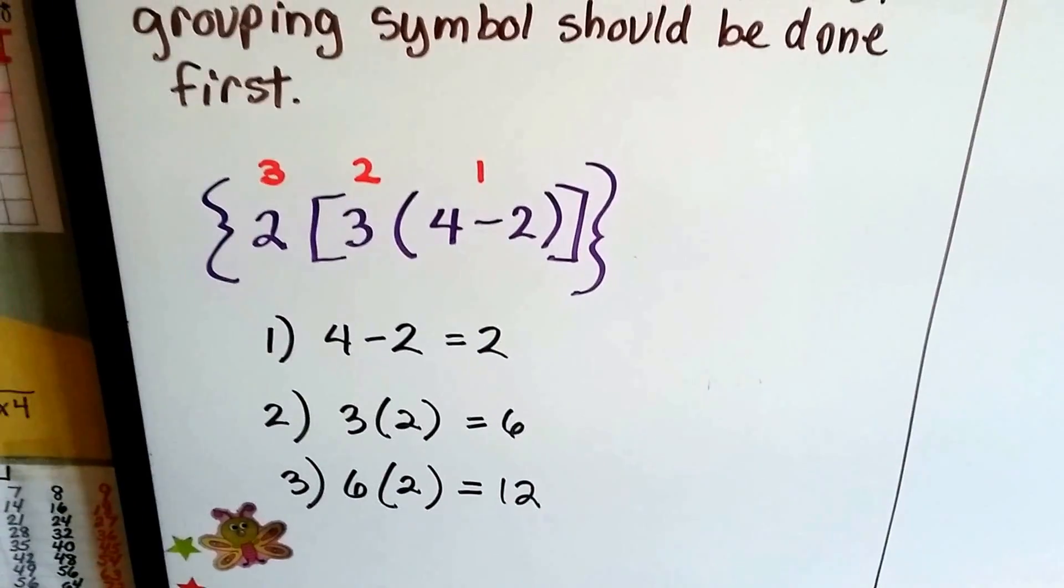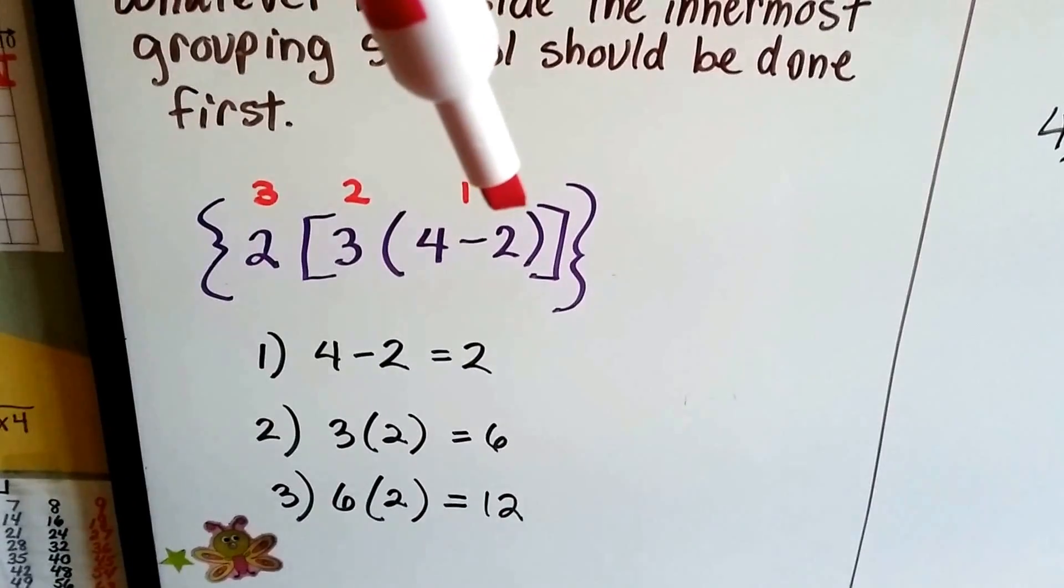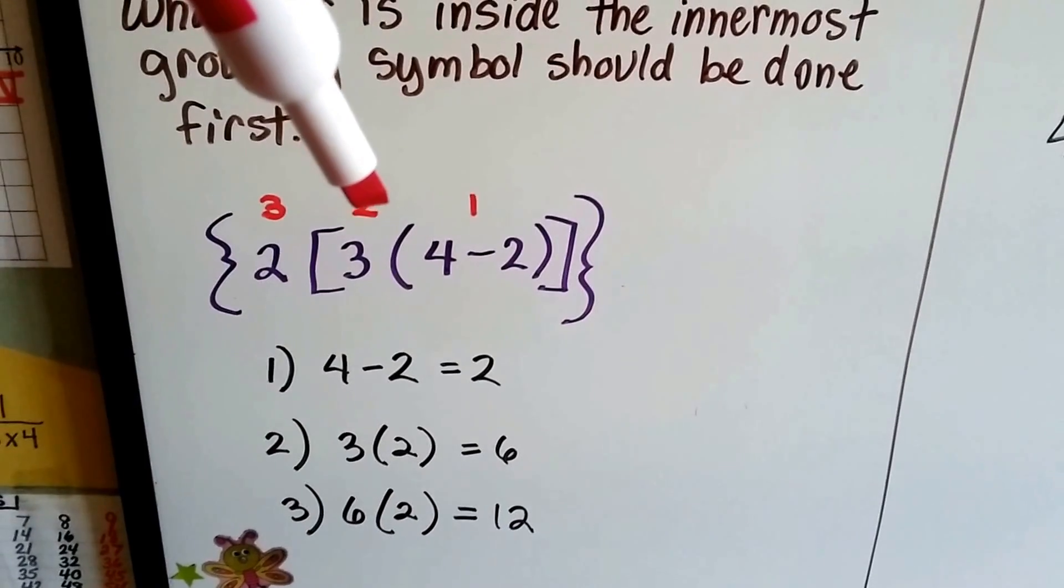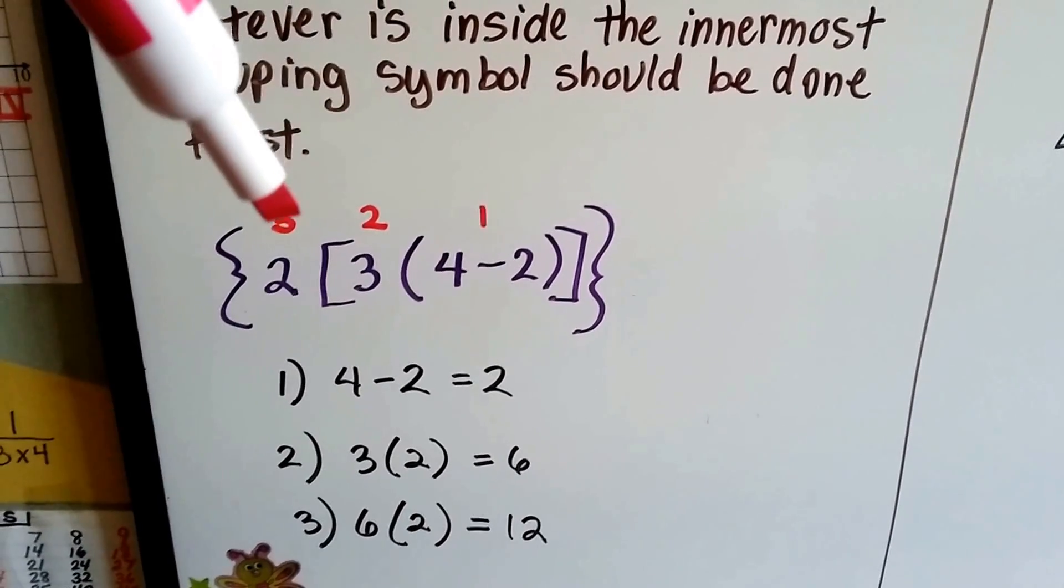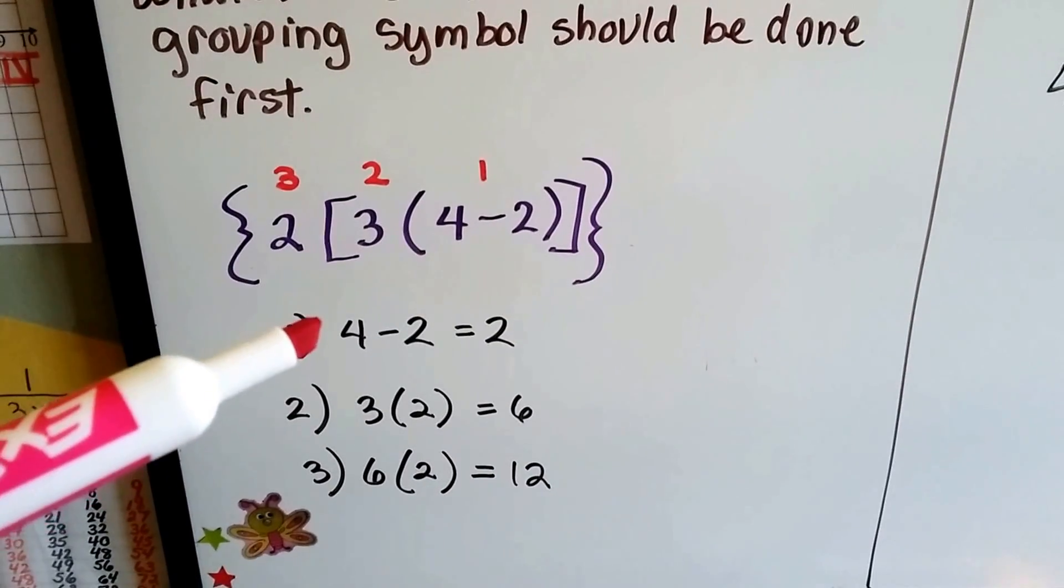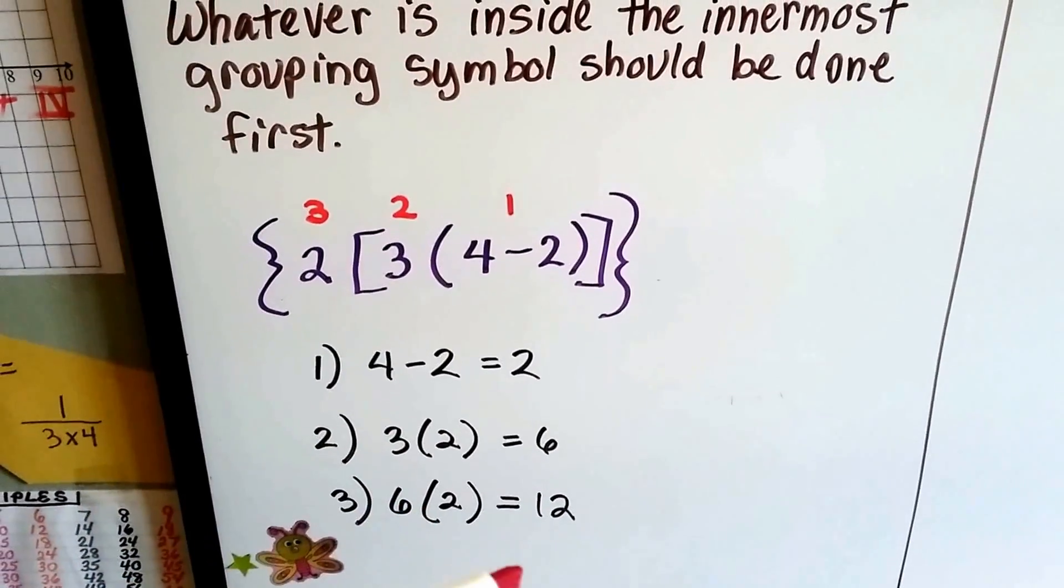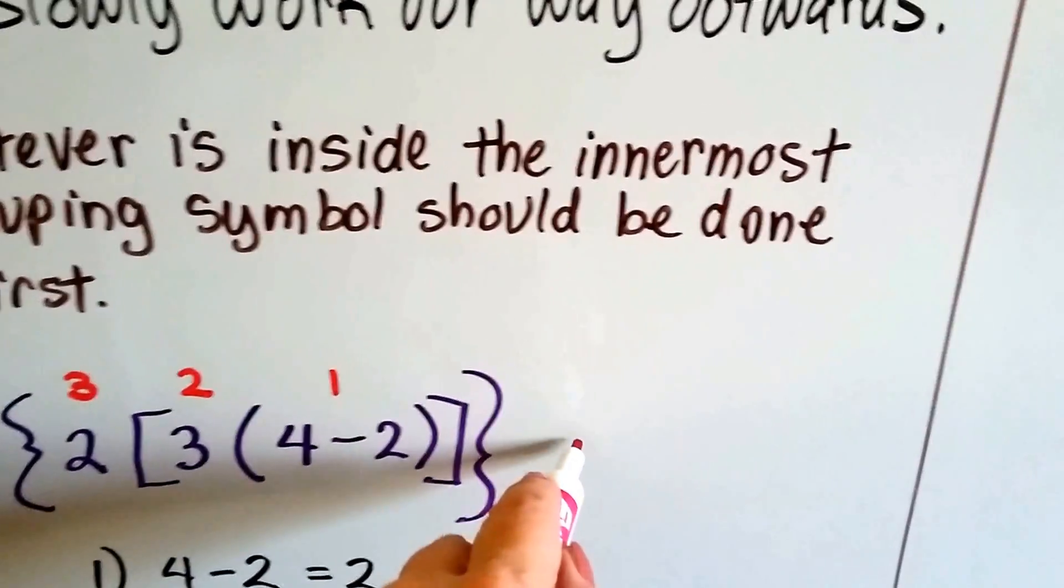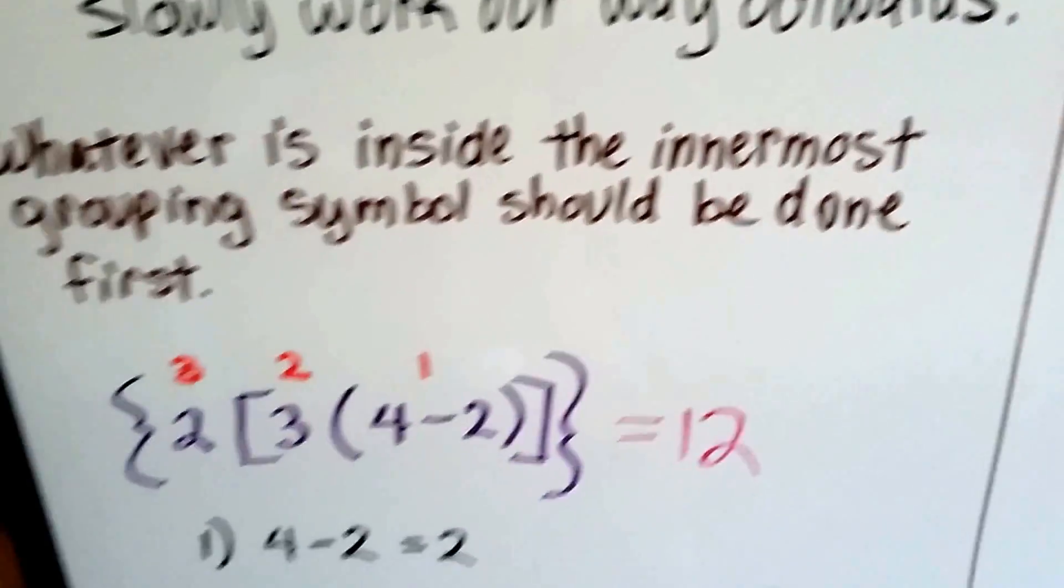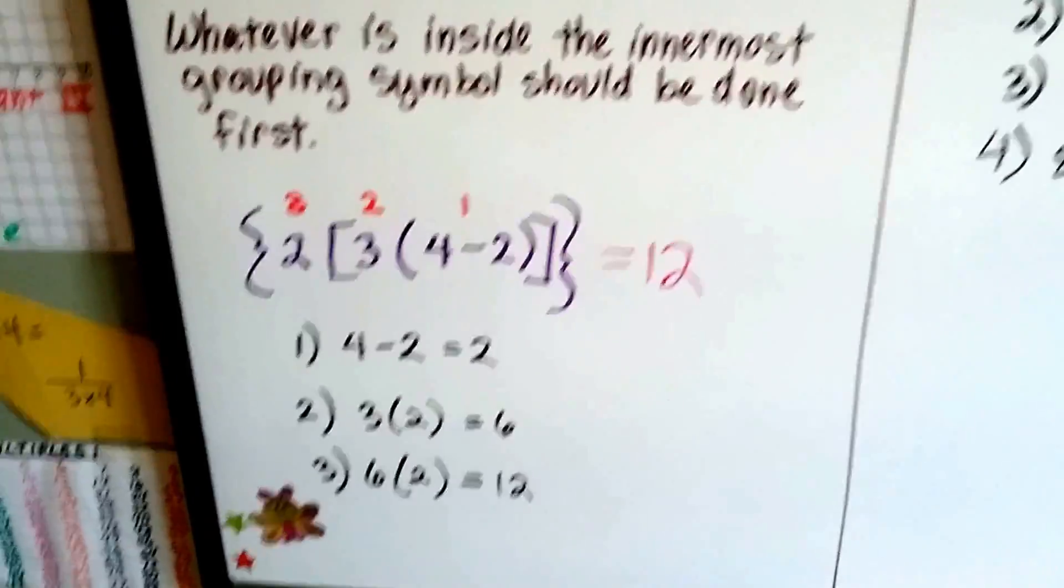So in this case, we would do 4 minus 2 first. Then we would multiply that answer by 3. Then we would multiply that one by 2. 4 minus 2 is 2. 3 times 2 is 6. 6 times 2 is 12. This whole thing equals 12. Start on the inside and slowly work our way out, okay?